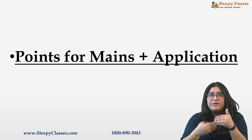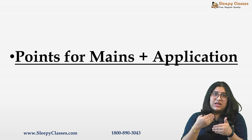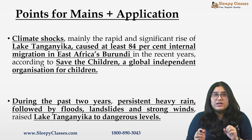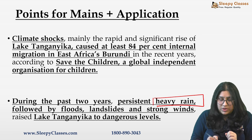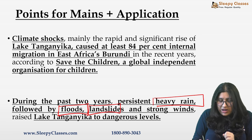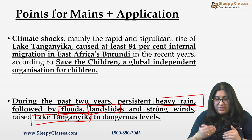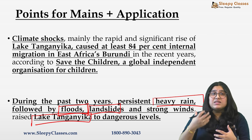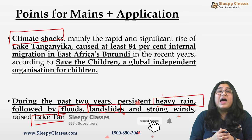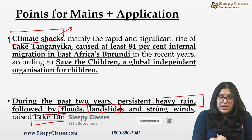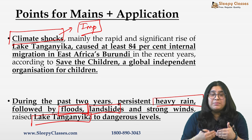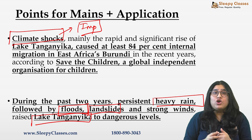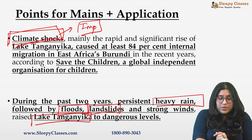अब देखते हैं कि Down to Earth के इस article में जो भी चीज़ें दी थीं, उनको हम अपने mains में कैसे use कर सकते हैं। The article said कि past two years से इस particular region में बहुत ज़्यादा heavy rains हो रही है। Heavy rains की वज़ह से floods हो रहे हैं, landslides हो रहे हैं, और इस particular lake का level बहुत ज़्यादा बढ़ गया है। इन heavy rains, floods, landslides को यह article 'climate shocks' refer कर रहा है — यह very good word है अगर आप अपने answers में climate migrants की बात करें।